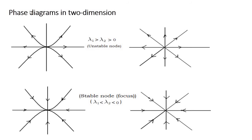For a more detailed explanation on phase portraits: if the phase lines are going away from your equilibrium point, this is called an unstable equilibrium point. If the phase portrait arrows are coming toward the point, we call this a stable equilibrium point.